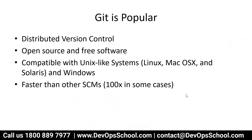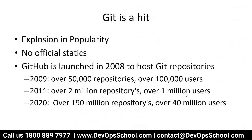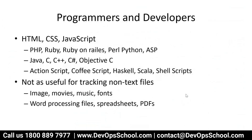Git is open source and free software. It is compatible with all operating systems — you can install it on Windows, Linux, or Mac. Because it's a distributed version control system, its architecture makes it faster than other SCMs. GitHub was launched in 2008 to host Git repositories, and you can see its growing popularity from 2009 through 2011 and 2020 and beyond.